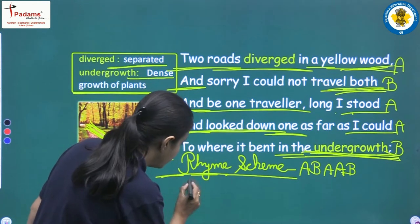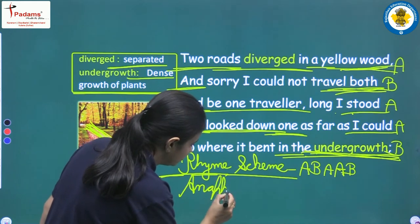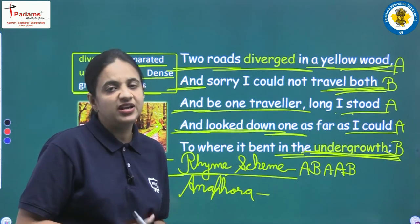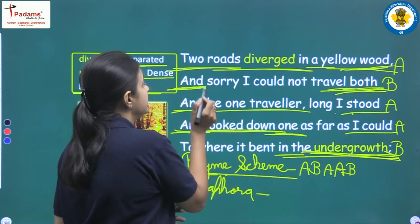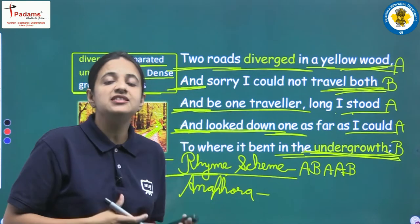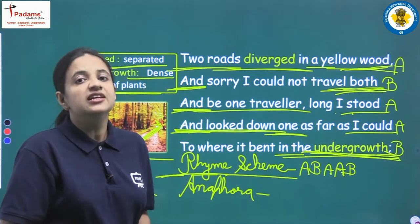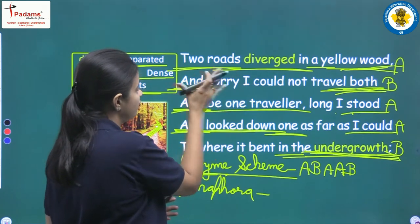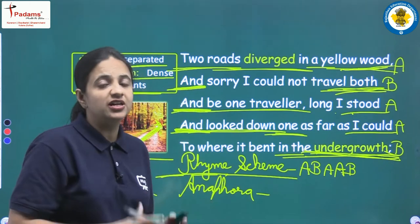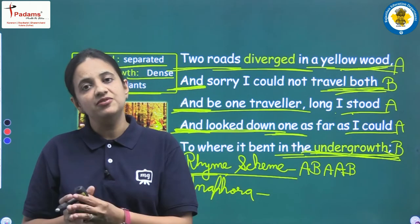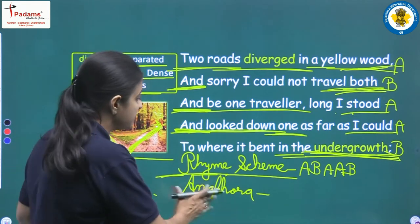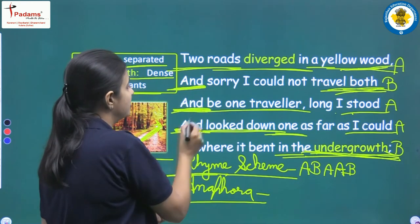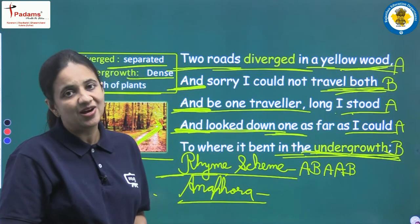The next literary device is anaphora. Anaphora is when the same word is repeated at the beginning of consecutive sentences. Here, the word 'and' is used at the beginning of the second, third, and fourth lines of the first stanza, making this an example of anaphora.